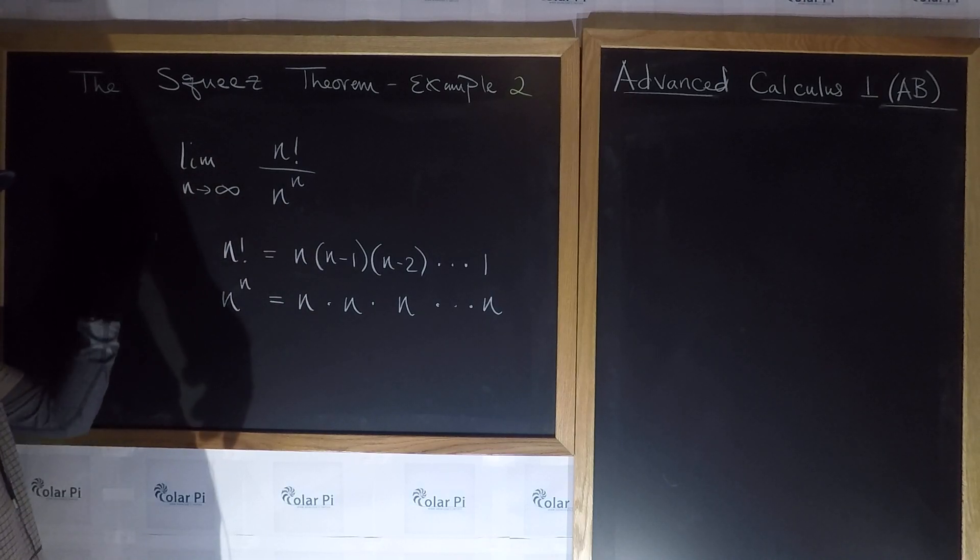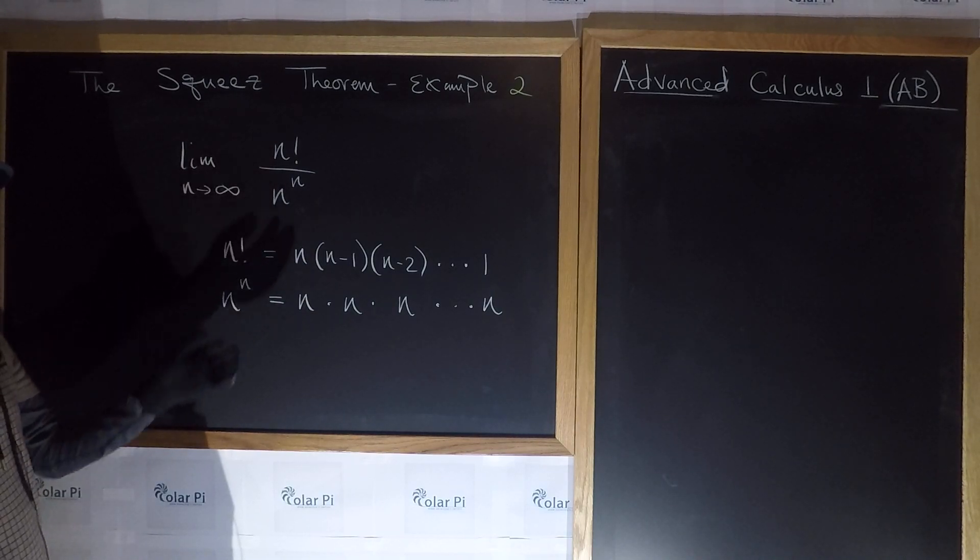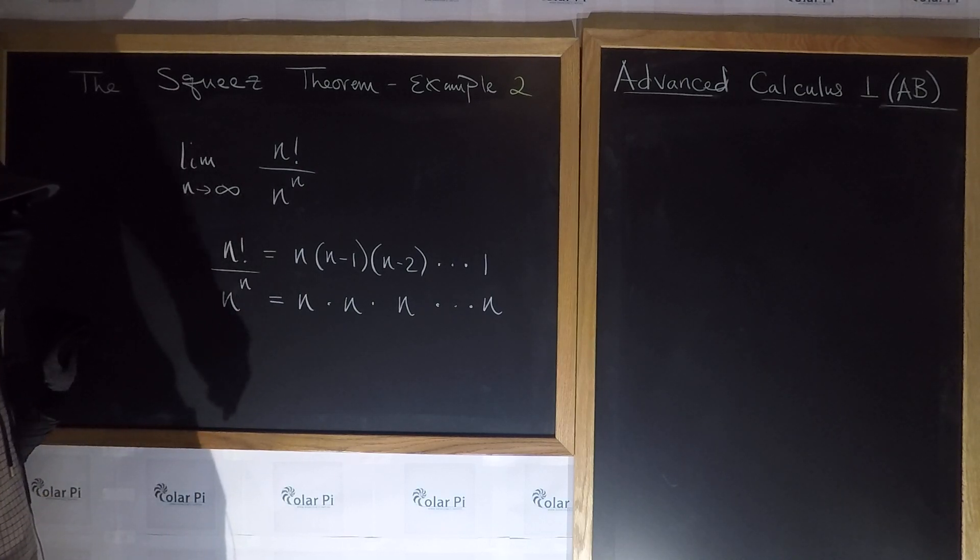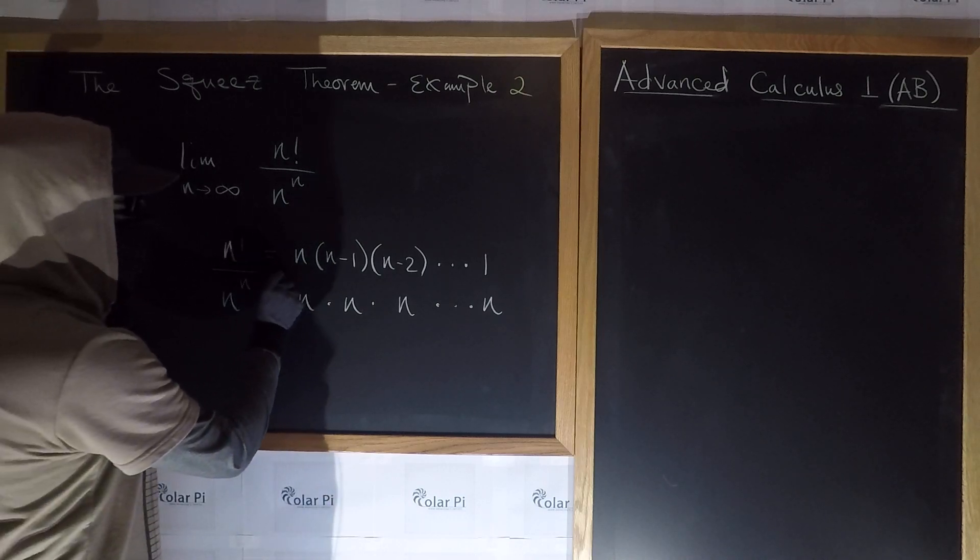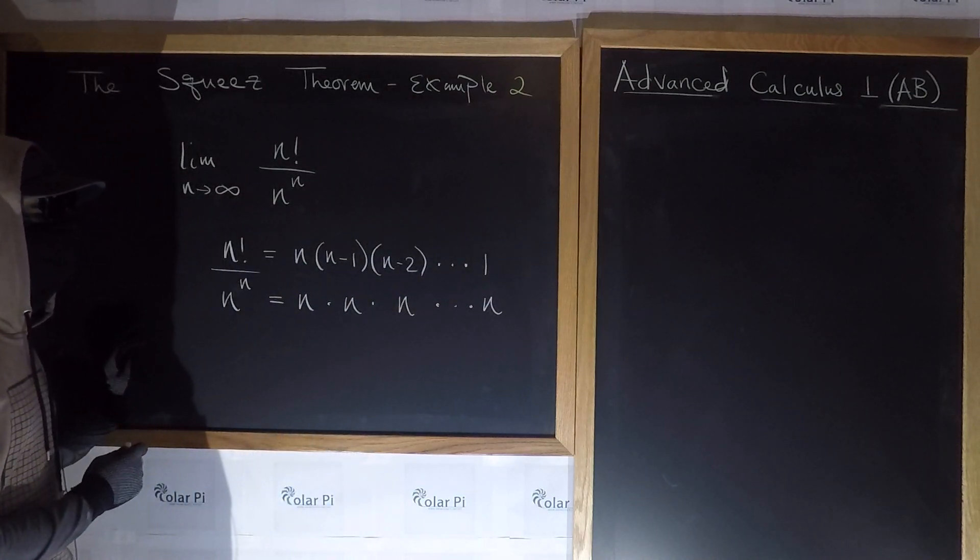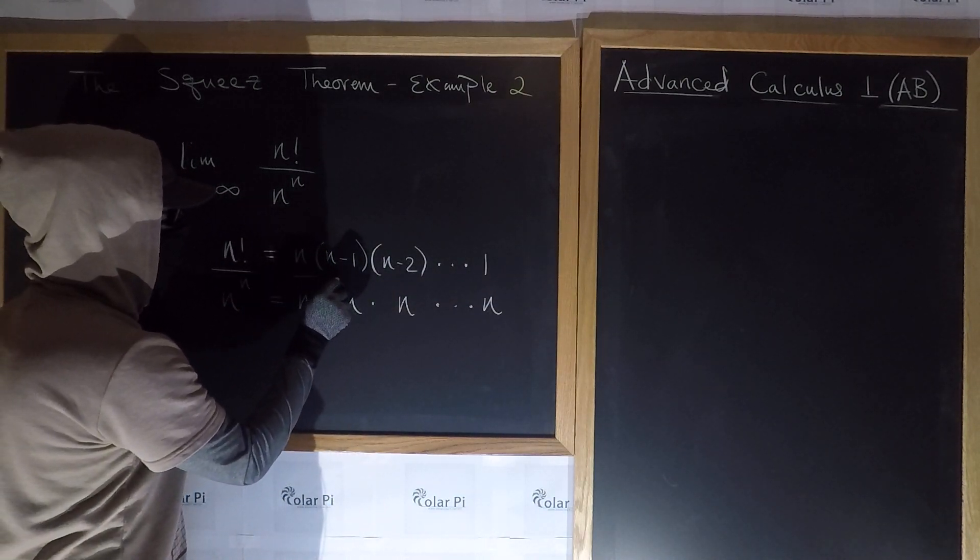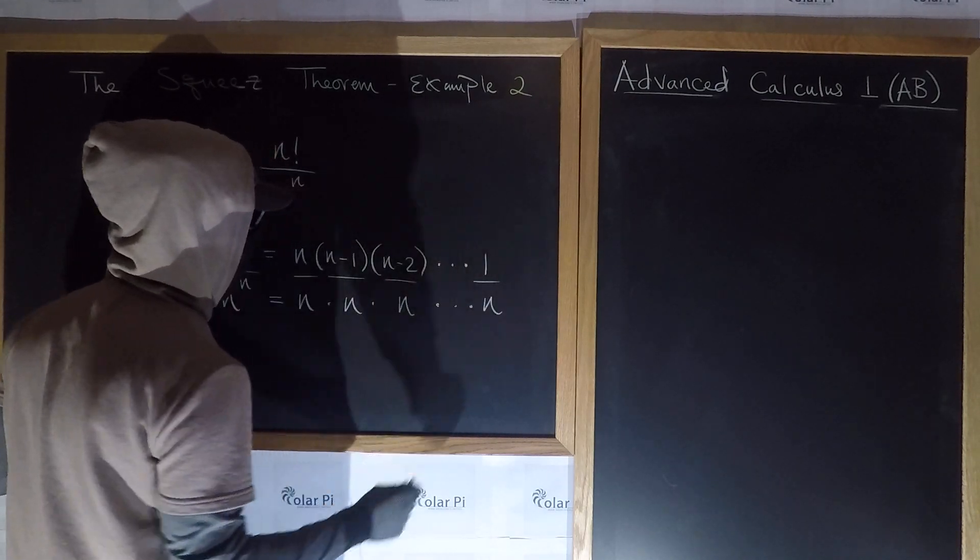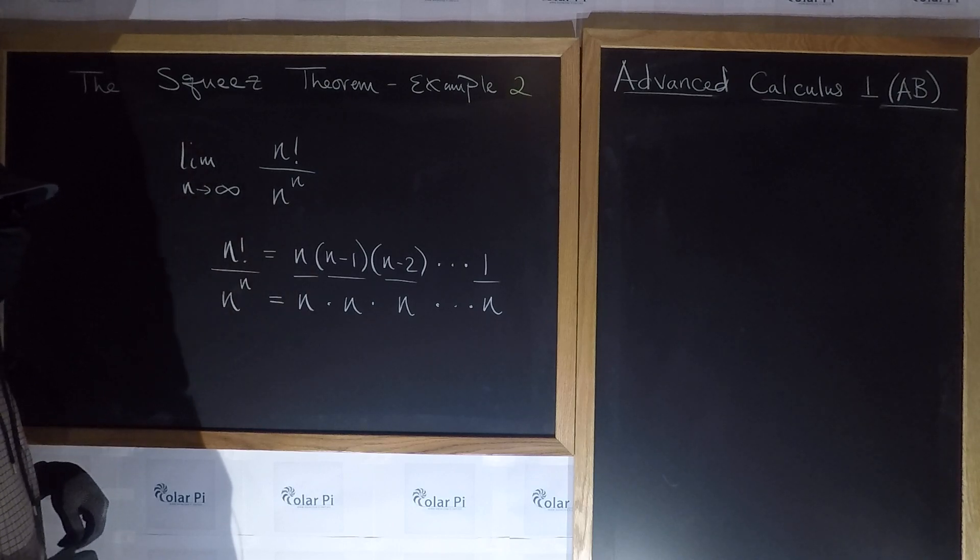This limit has as a quotient n factorial and n to the n. So what we should do is put a division sign here. That amounts to putting a giant division sign right there. But we could just put individual division signs and create n quotients like this.